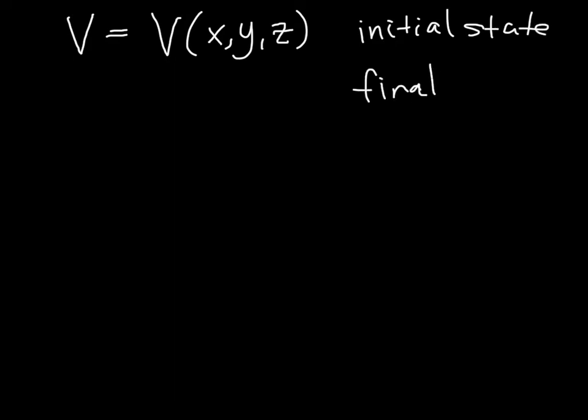And you can think of V as whatever you want. V can vary with x, y, and z. And so let's say that this is sort of our initial state. And then let's consider that we have some final state.